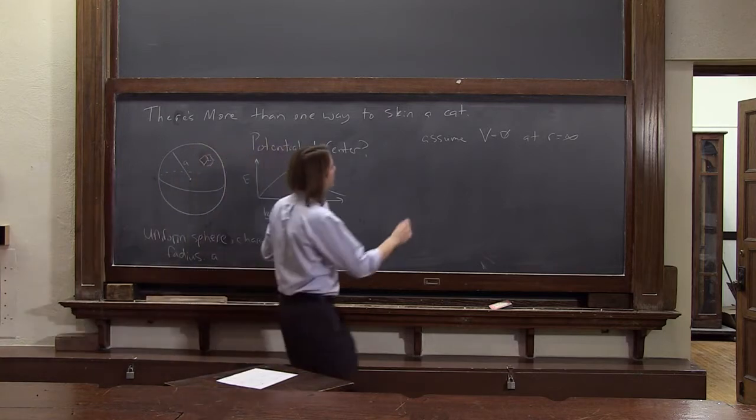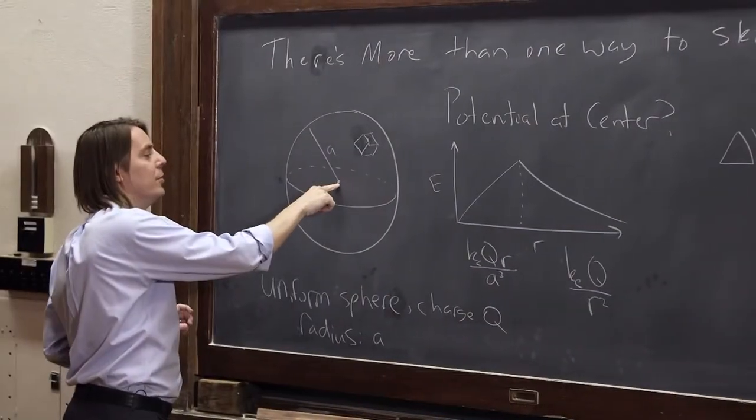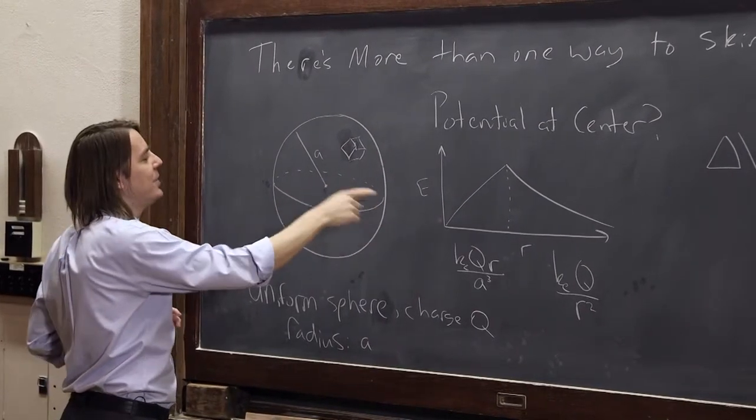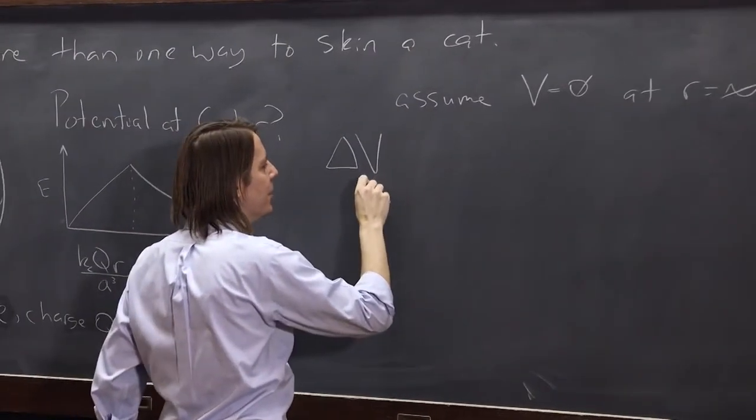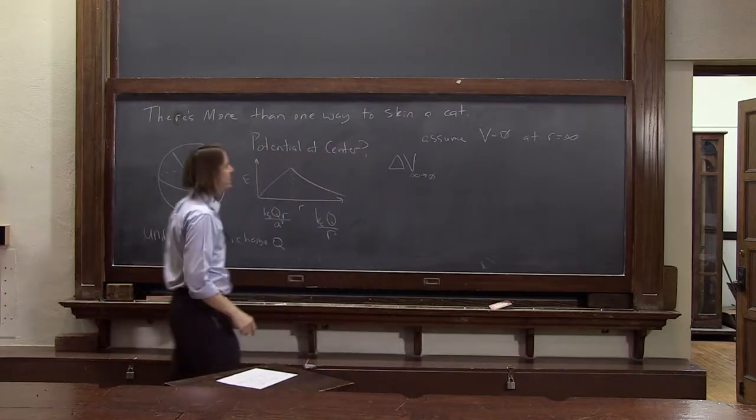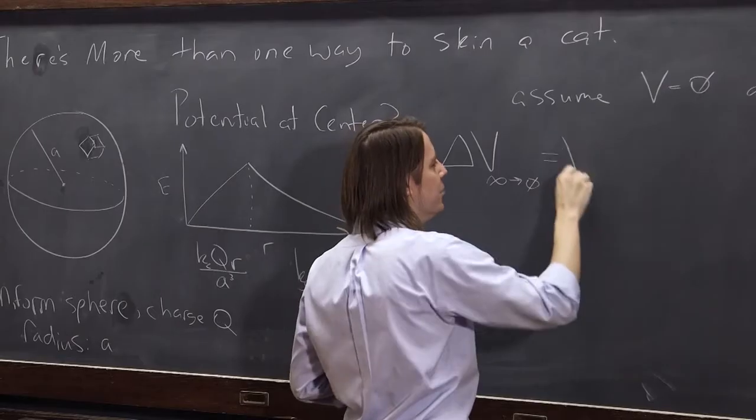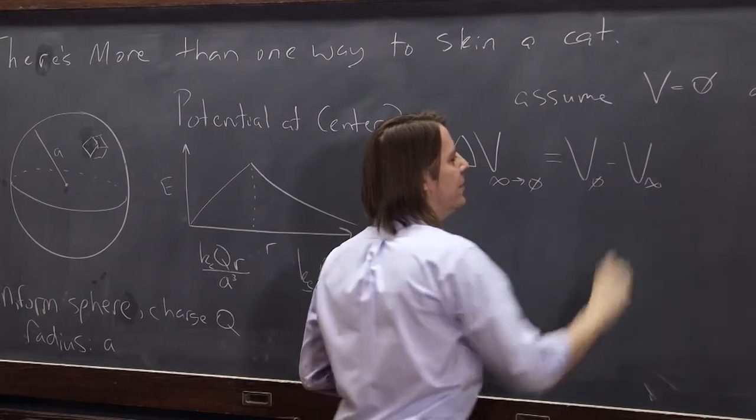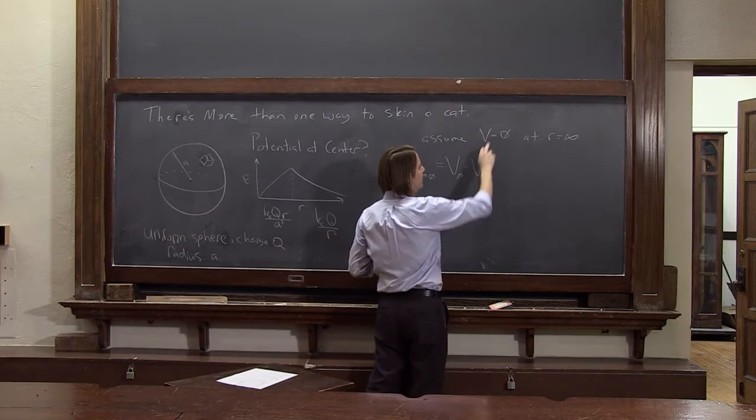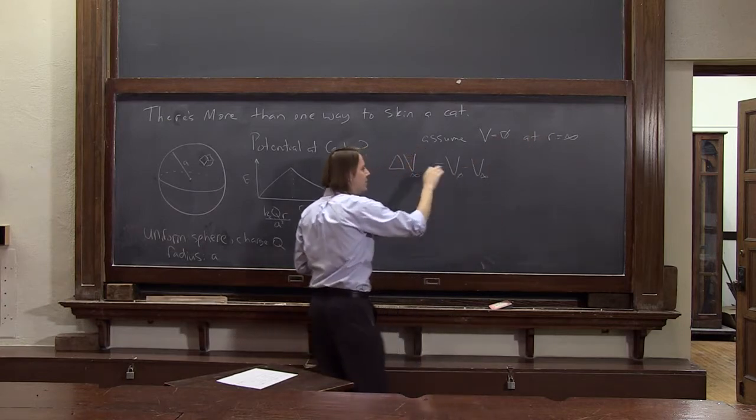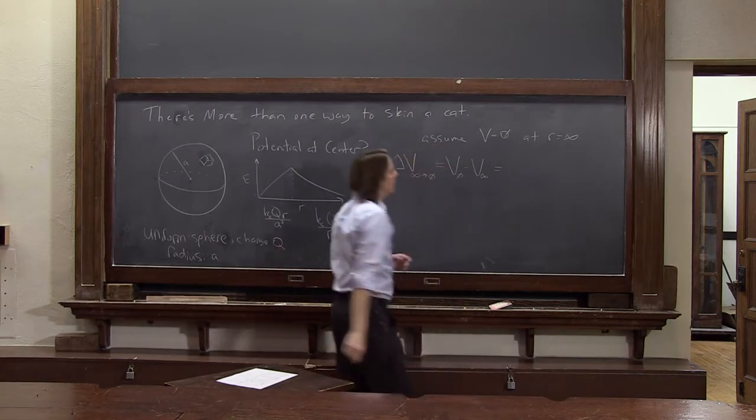We always assume that. It's just when it gets a little more complicated than a point charge, you want to remind yourself, and you want to write everything out in a little more detail. So what we want to do is get the delta V going from infinity to the point we care about, the center. Because we're trying to find the potential of the center. And if it's a difference, it's the final minus the initial. So if we write this delta V from infinity to zero, it's going to be equal to the potential at zero minus the potential at infinity. And we've already said that this is zero at R equals infinity, so that'll go away. So solving this actually does give us the potential at the origin for the case that it's zero at infinity.